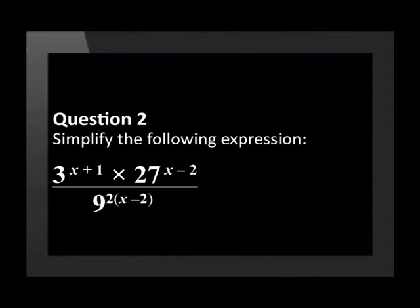Question 2. Simplify the following expression: 3 to the power of x plus 1, times 27 to the power of x minus 2, over 9 to the power of 2(x minus 2).